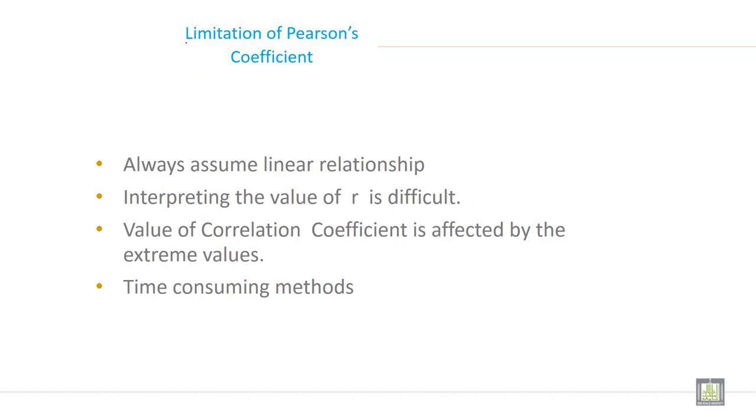What are the limitations of Pearson's coefficient of correlation? It always assumes a linear relationship. This is, you can say, one of its qualities and one of the limitations also. It always assumes a linear relationship - you cannot assume any non-linear type of relationship between two or more variables.